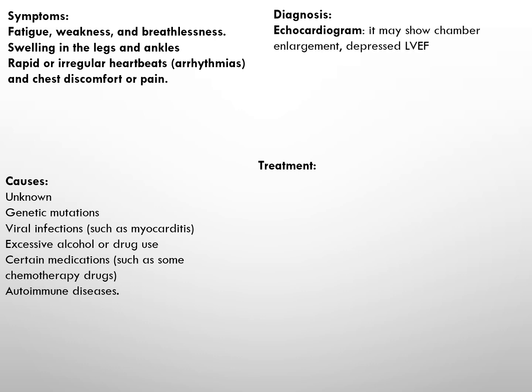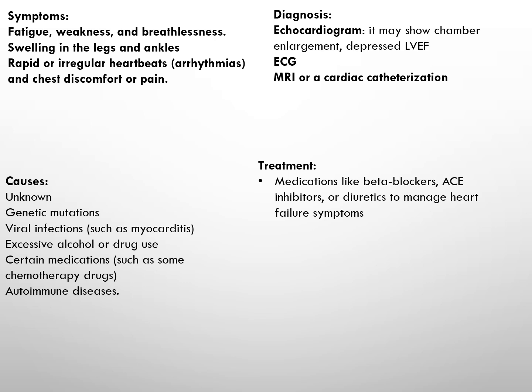Diagnosis is done by echocardiogram to assess the heart's structure and function. It may indicate chamber enlargement and depressed left ventricular ejection fraction. ECG is done to check for abnormal heart rhythm, and sometimes additional testing such as MRI or cardiac catheterization is required.